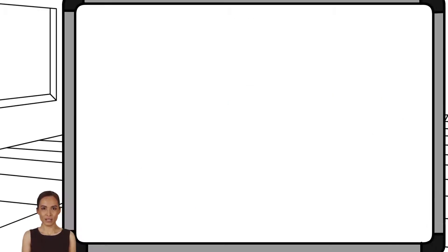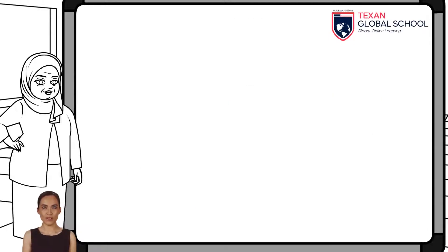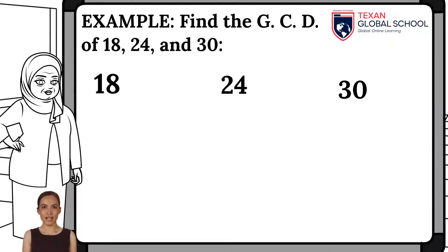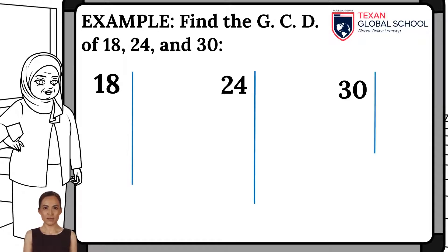In this other example, we will find the greatest common factor of 18, 24, and 30. As we mentioned in the process, we will obtain the prime factors of each of the numbers separately.